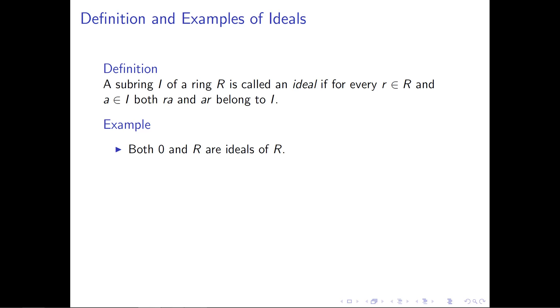Two of the easiest examples, just like with subgroups, are what we typically consider trivial examples. The ideal consisting of just the element zero is an ideal, and the whole ring R is an ideal.